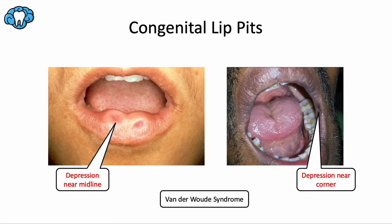Next is congenital lip pits. Congenital means present from birth. Lip pits refer to depressions in the surface of the lip that usually have salivary glands draining into them. They almost exclusively occur on the lower lip and are extremely rare in the upper lip. These invaginations occur either near the midline or at the commissures — the corners of the mouth. They are generally bilateral, affecting both sides. They are called commissural pits when located specifically at the commissures.